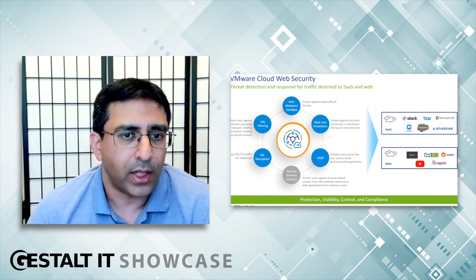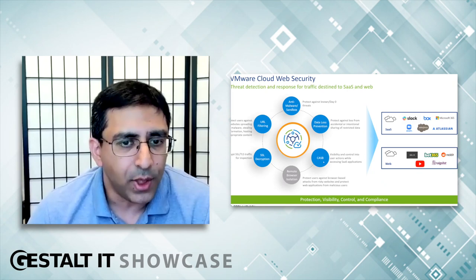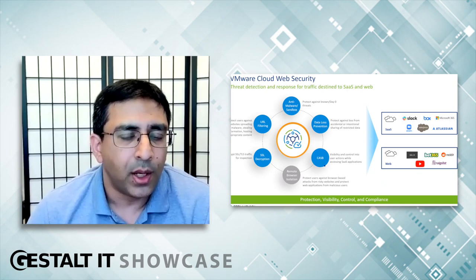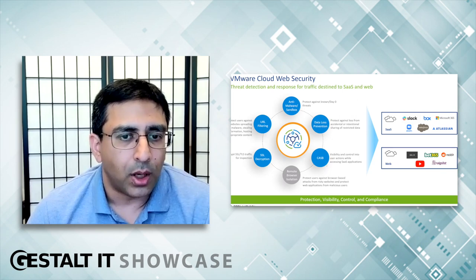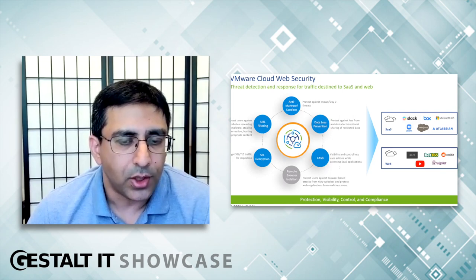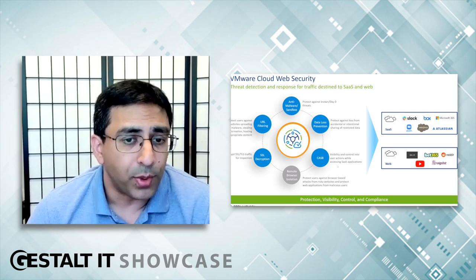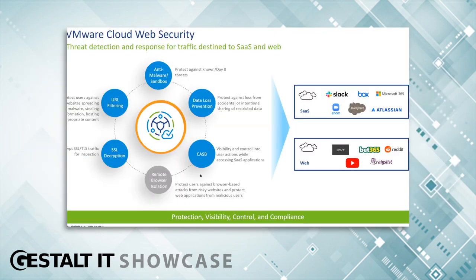Coming down the pipeline over the next couple of months is CASB — inline CASB. We're able to audit user actions against SaaS-based applications as well as do enforcement against those SaaS applications. Taking that HR example again — let's say you don't want HR people to upload pictures onto Facebook. That's a control Facebook doesn't offer their enterprise customers, but it is something we can impose through our CASB environment.